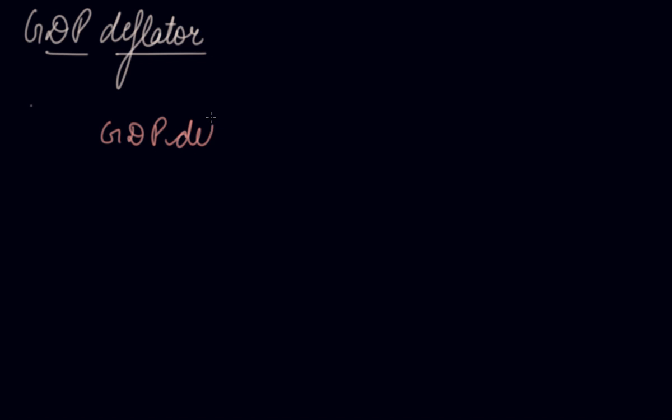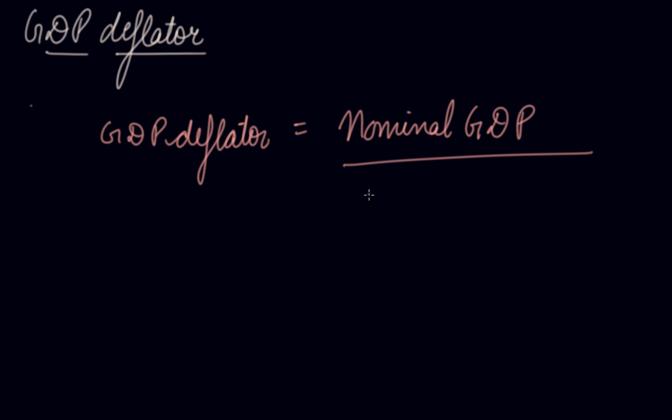GDP deflator can be measured as the ratio of nominal GDP divided by your real GDP into 100. This is your GDP deflator.